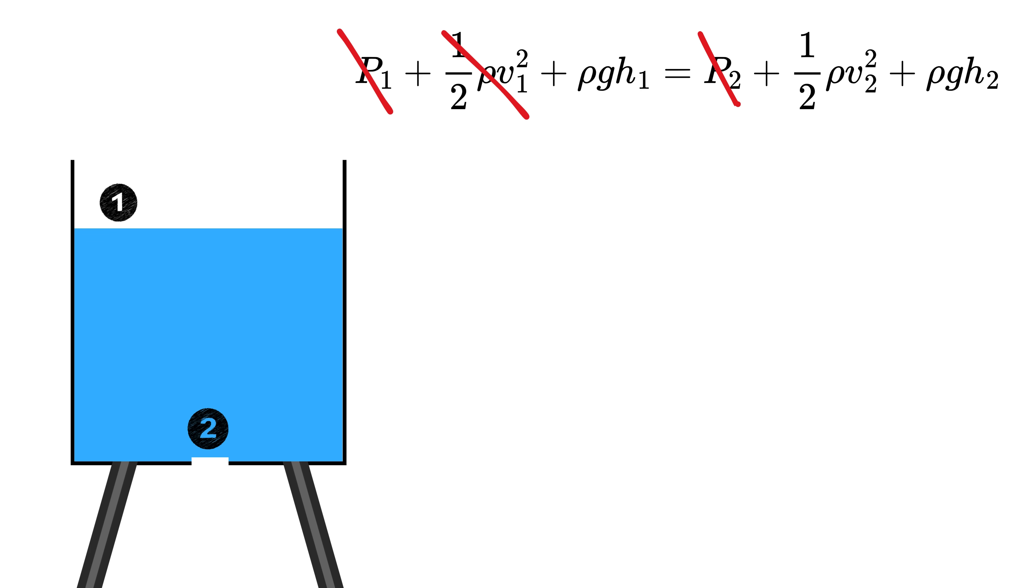Now, at any moment in time, let this height be equal to H, which keeps decreasing as water flows out. So if this is at height H1 and this is H2, then H1 minus H2 equals H. Now, in this equation, take H2 here, and we get this.